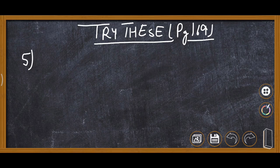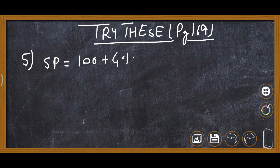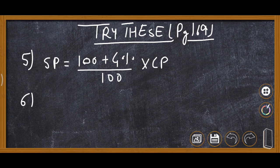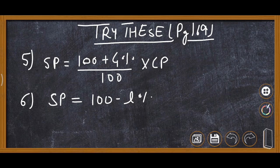Now these are the formulas for selling price. If gain percent is given, the selling price formula is: SP = (100 plus gain percent) upon 100, multiplied by CP. If loss percent is given, the selling price formula is: SP = (100 minus loss percent) upon 100, multiplied by CP.